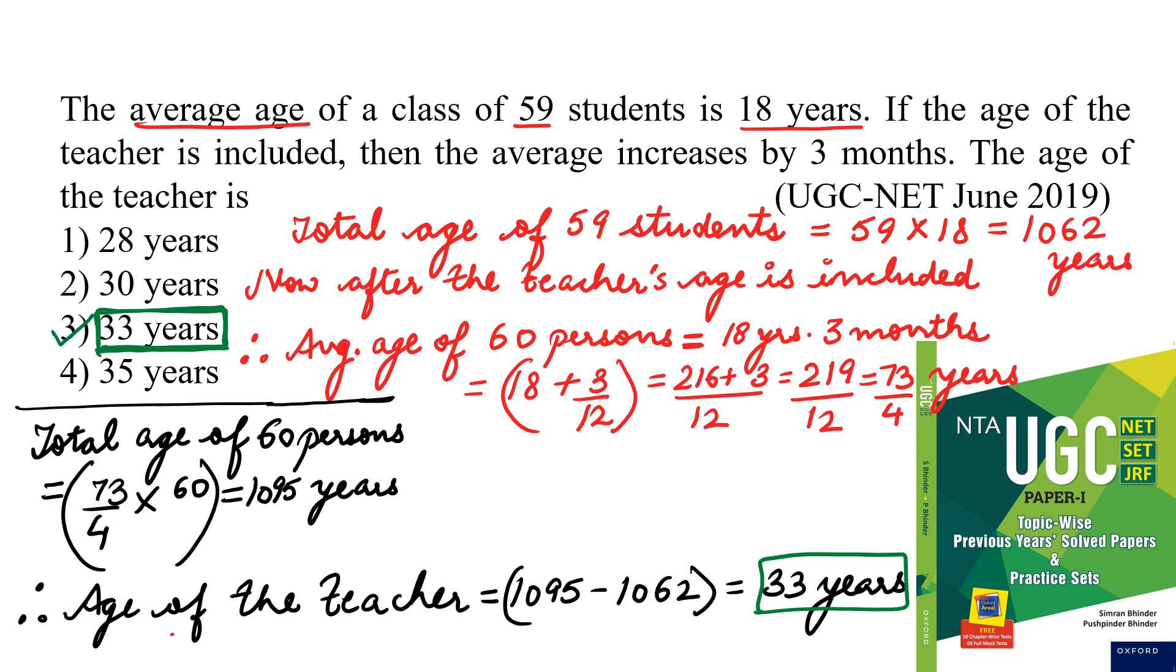Next, this is again a UGC net question. This is a very easy question. You just have to read it carefully on the spot and you will be able to attempt. Let's understand these type of questions. The average age of a class of 59 students is 18 years. It's given in the question - average age of a class, number of students 59, their average age is given, that is 18 years. If the age of the teacher is included, that means one more person is being included, then the average increases by 3 months. The age of the teacher is - just read the question carefully, this question is not at all tough. You should score 100% correct on these questions.